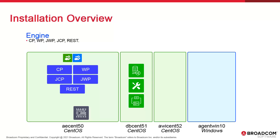The REST process handles REST API requests. The engine connects to the database using both ODBC and JDBC. Together, the database and the engine form the technical core of Atomic Automation.